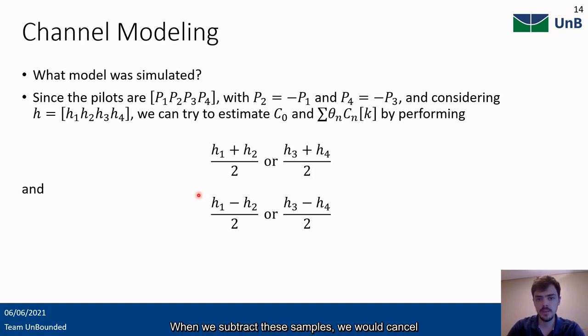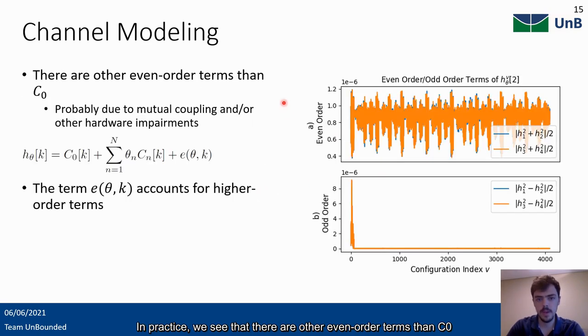When we subtract these samples, we would cancel C0 and only obtain the first-order terms. In practice, we see that there are other even-order terms other than C0, because we see that this graph here is not a constant, probably due to mutual coupling and or other hardware impairments. We, therefore, add a term E theta k that counts for higher order terms.